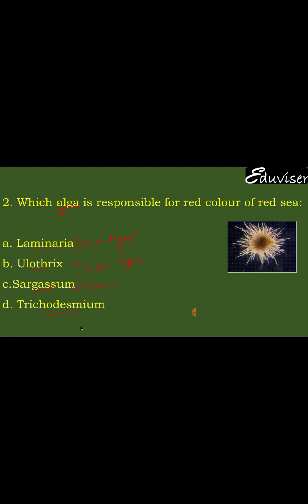Trichodesmium is a red alga belonging to the Rhodophyceae group. That is why it provides red color to the Red Sea. It grows in very dense amounts — like a water bloom — in the Red Sea, and that is why the color of the Red Sea appears red.